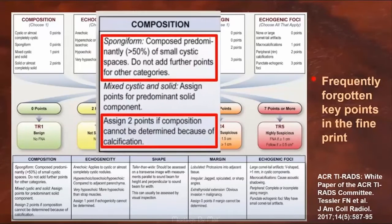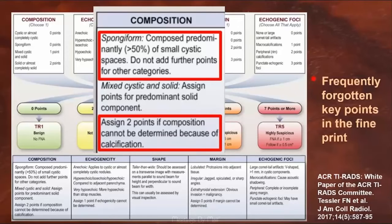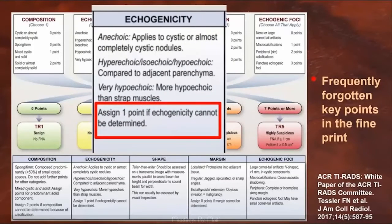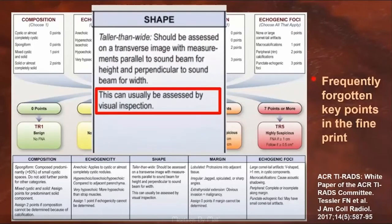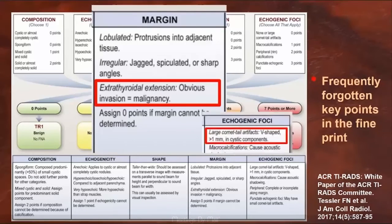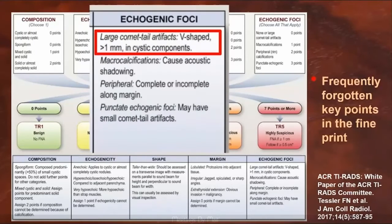For instance, with composition, spongiform nodules require at least 50% of the nodule to be spongy, and also when the composition can't be determined, you assign two points. You assign one point when echogenicity can't be determined. Shape — whether it's taller than wide or wider than tall — can usually be determined on visual inspection. Extrathyroidal extension should only be diagnosed when it's obvious and unequivocal. And large comet tail artifacts need to be greater than one millimeter to qualify — and realize that one millimeter may be longer than you think. You may need to measure it a few times to get a feel for what one millimeter really is.